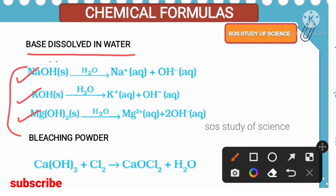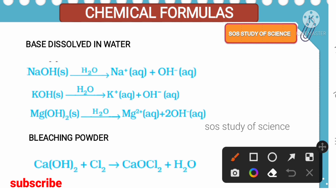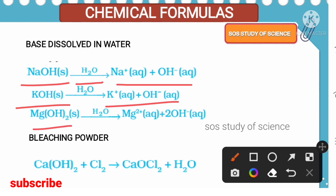This definition was already covered in the crash course. Moving to the equations: sodium hydroxide dissolved in water gives sodium⁺ and hydroxide⁻ ions (separate). Similarly potassium hydroxide dissolved in water gives potassium⁺ and hydroxide⁻. Magnesium hydroxide dissolved in water gives magnesium²⁺ and hydroxide⁻. Very important — remember all three.